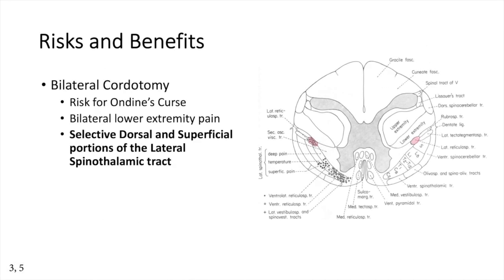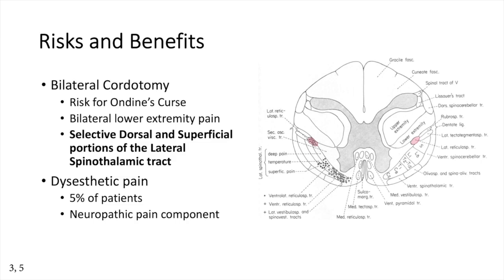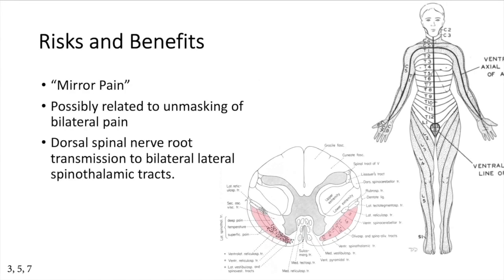It can also occur within the context of a bilateral chordotomy. Bilateral chordotomy is often reserved for bilateral lower extremity pain and involves supraselective lesioning of the superficial and dorsal portion of the spinal cord. Deafferentation pain can occur in up to 5% of patients with a neuropathic component to their pain who are long-term survivors, as well as those who receive large lesions. One important though rare consequence is mirror pain, which can occur in up to 5% of patients. This is thought to result from bilateral pain that is unmasked by the procedure, or transmission of the dorsal spinal nerve roots into bilateral spinothalamic tracts.